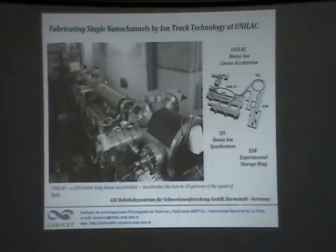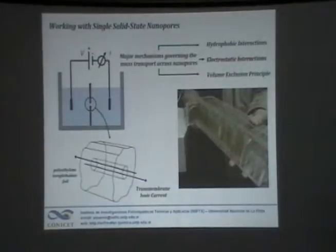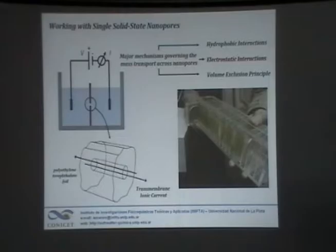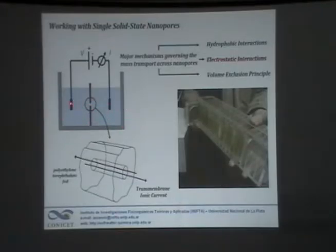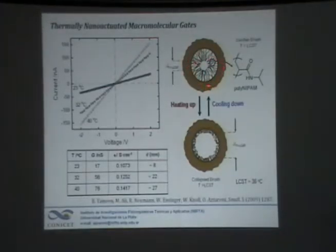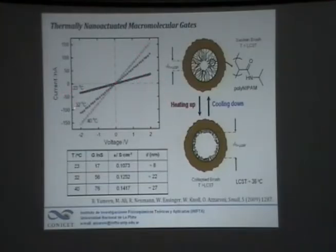What we use is track-etched membranes — a polymer membrane nearly 12 micrometers thick. We use heavy-ion irradiation and then etching to create membranes with only a single pore — single nanopore membranes. These membranes are prepared at GSI in Germany, which provides the capability to get a membrane with a single nanopore. We are talking about a membrane which is physically 2 square centimeters with a single pore of between 5 and 15 nanometers. We use this cell to measure trans-membrane transport using potassium chloride as electrolyte, to observe ion transport through the membrane.